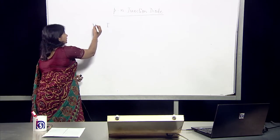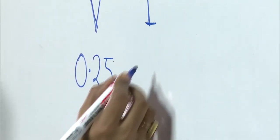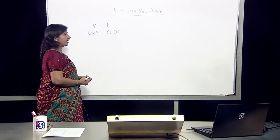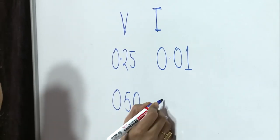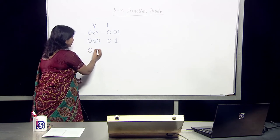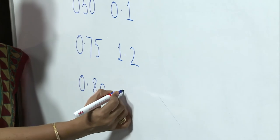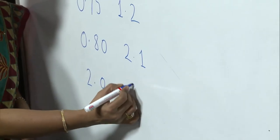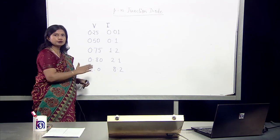Let's note down the readings of voltage and current. Corresponding to 0.25 volts, the current is negligibly small. As the voltage increases, the value of the current changes. Corresponding to a value of 0.50 volts, the current rises to around 0.1 milliampere. Beyond the knee voltage there is a further rise in the value of the current. Further rise in voltage changes the current to larger values. Corresponding to 2 volts, the current shows a continuous increase to 8.2 milliampere. Let's plot a graph corresponding to these values.